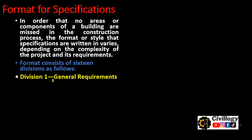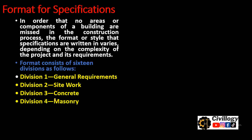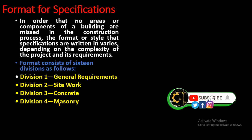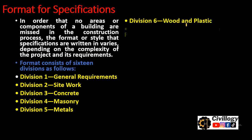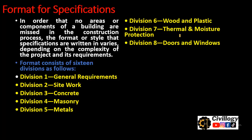Division 1 is about general requirements; division 2 is site work; division 3 is concrete; division 4 is masonry — specifying what type of concrete should be used and what should be the strength of concrete for a specific structure. Masonry includes the type of bond and masonry units such as brick masonry, block masonry, and the types of bricks. Division 5 is metals — what type of metals should be used; division 6 is wood and plastic; division 7 is thermal and moisture protection; division 8 is about doors and windows, including the sizes of doors and the type of materials which could be used for making doors and windows.